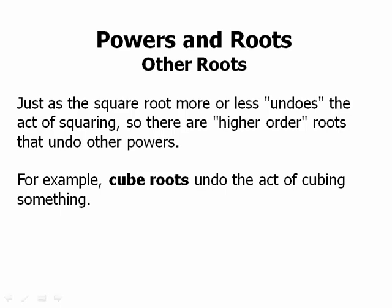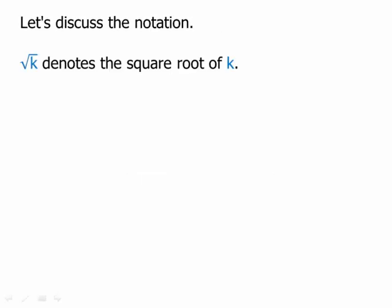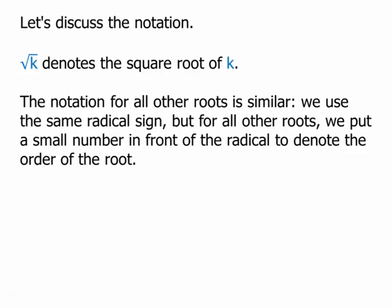Just as we can raise something to the third power, we can find what number raised to the third power would equal a certain result. First, let's talk about the notation. The square root of k — radical k — denotes the square root of k. The notation for all other roots is similar: we use the same radical symbol, but for all other roots we put a small number in front of the radical to denote the order of the root.